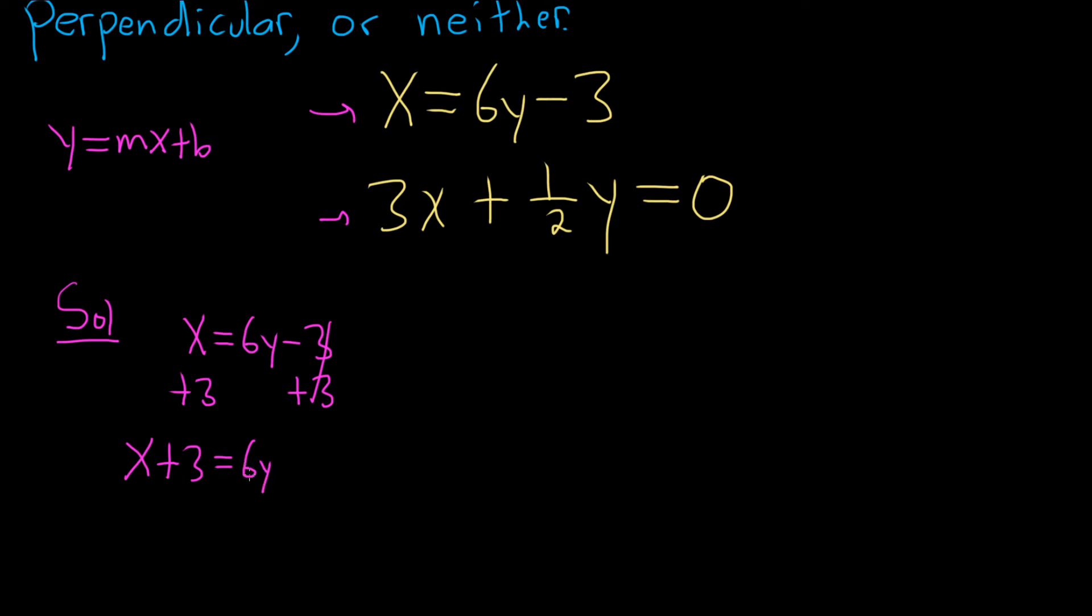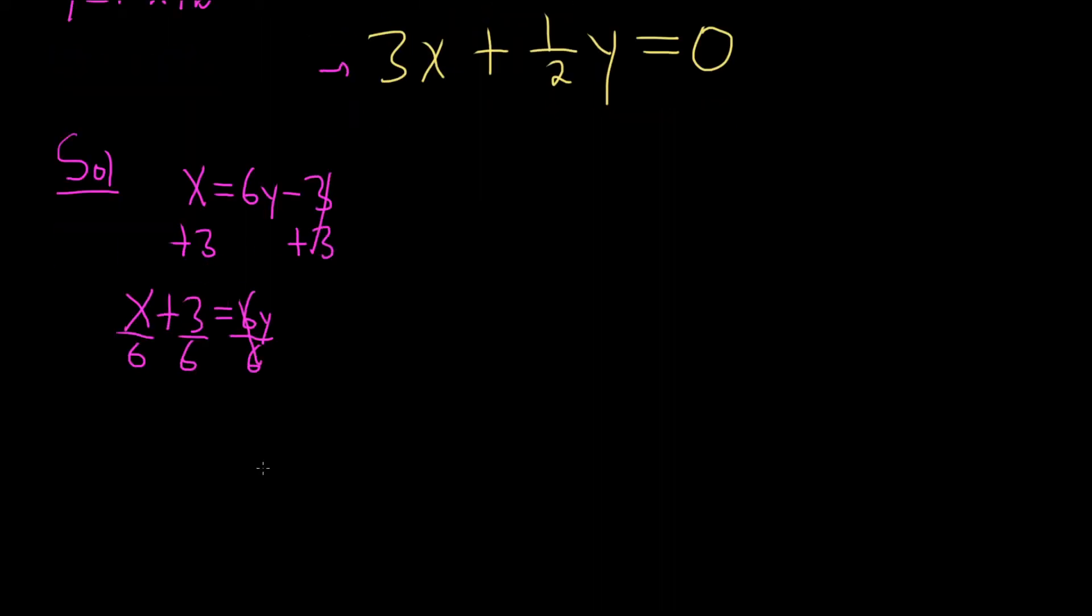So we have x plus 3 equals 6 times y. We're looking for y, and it's being multiplied by the 6. We can divide both sides by 6, but you can take a shortcut - just divide each term by 6. That gives us x over 6 plus 1 half equals y.